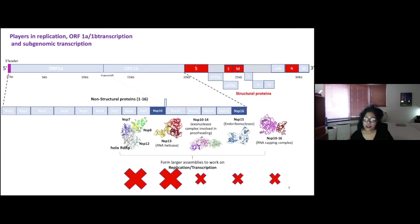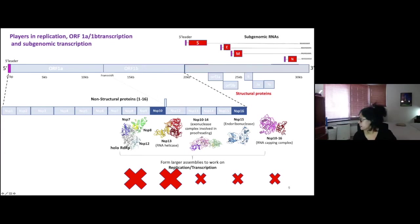They do know, again, the genetics in the arterivirus and some confirmed in coronaviruses, that the polymerase and the helicase are absolutely essential for the virus to replicate. These other proteins, they cripple the virus. So efficient replication is no longer possible when mutations are done here.